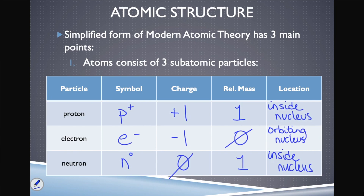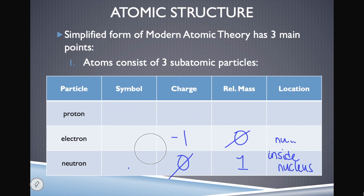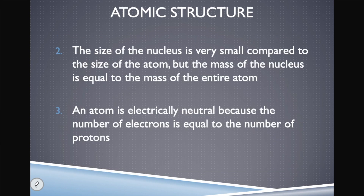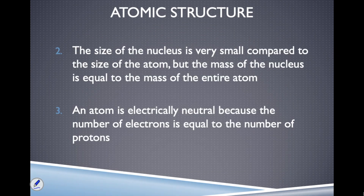Electrons make up most of the volume of the atom. So when we say the size of the nucleus is very small compared to the size of the atom, but the mass of the nucleus is equal to the mass of the entire atom — that's because electrons, which take up most of the volume, have essentially no mass.